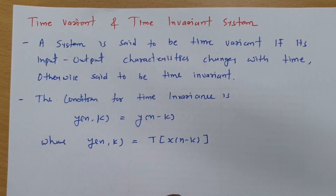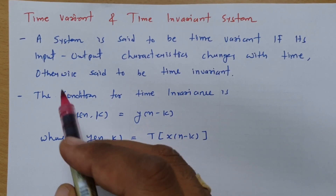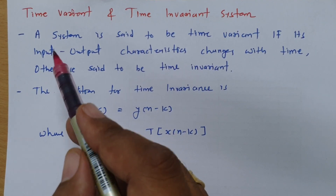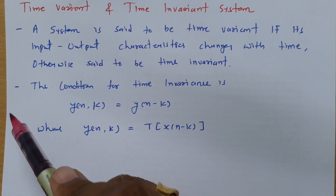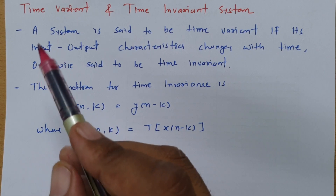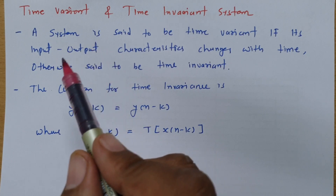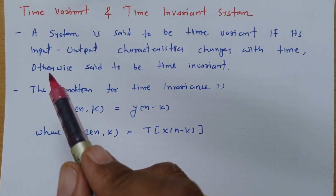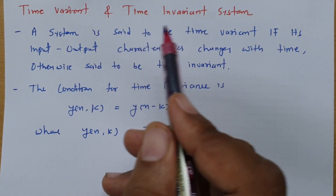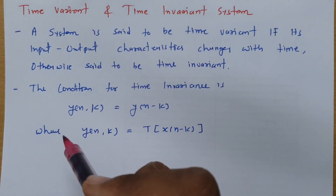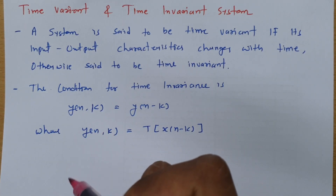Welcome to the signal and system lecture series. In this session I'll be explaining the classification of systems with time variant and time invariant systems. If a system's characteristic is not changing with respect to time, then one can say that the system is a time invariant system. But if the system's characteristic is changing with respect to time, then it will be a time variant system.